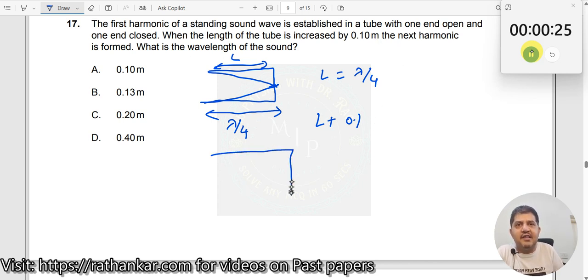Next harmonic - how does it look like? Same tube, but you will have one node here, one node here. There will be a loop like this and you will have a wave like this.